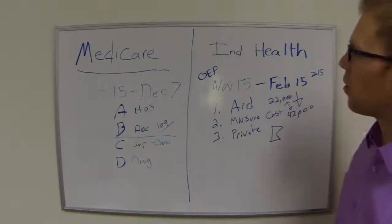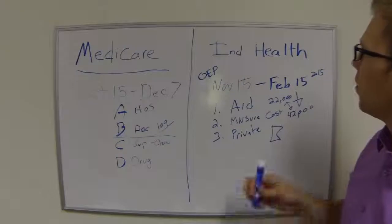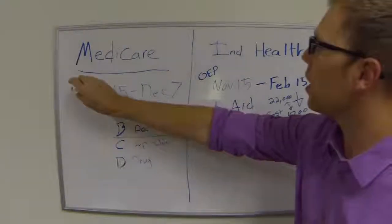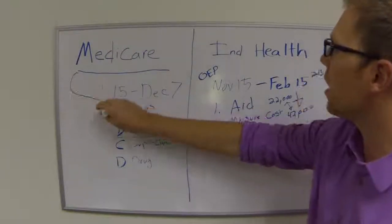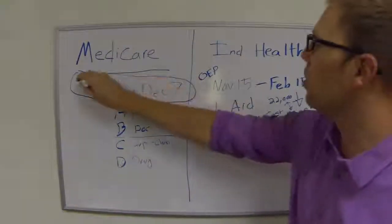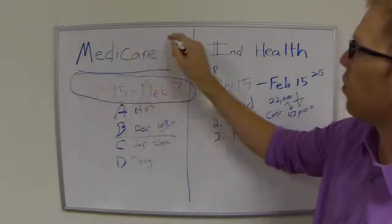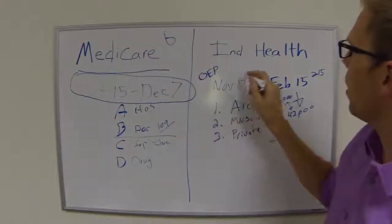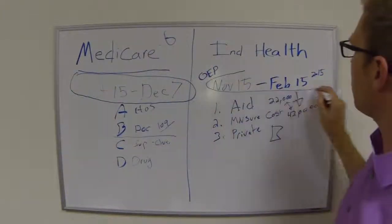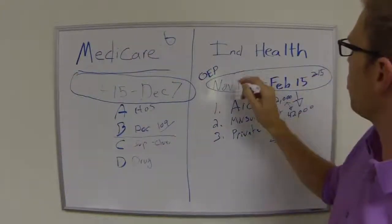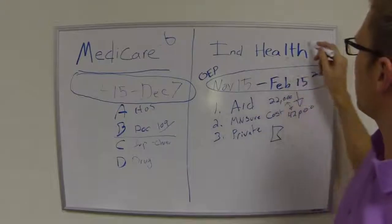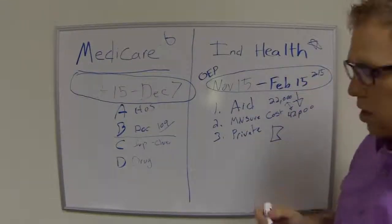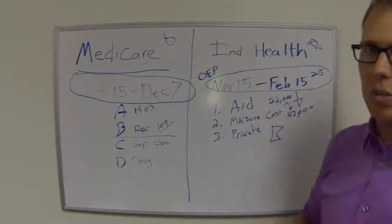So these are the basics of Medicare and Individual Health Care. The biggest thing are the dates: October 15th through December 7th for Medicare, and November 15th through February 15th for Individual Health Care in the state of Minnesota.